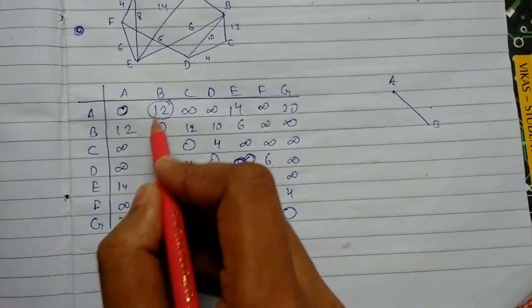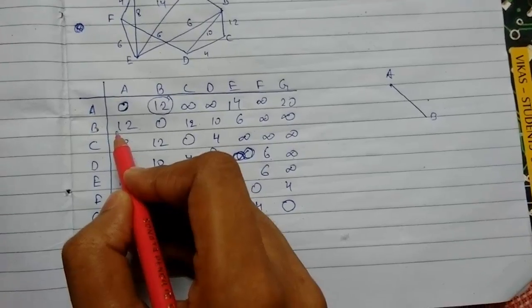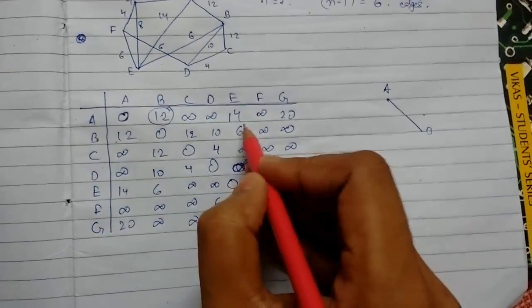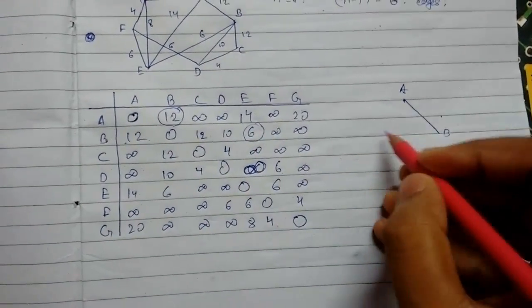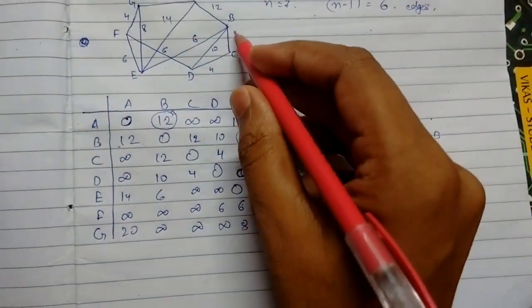Now we'll go to vertex B. In this the minimum is 6, so now B to E like this.